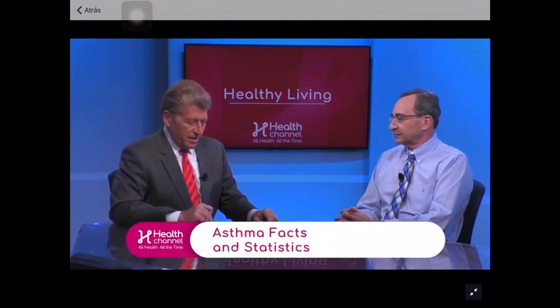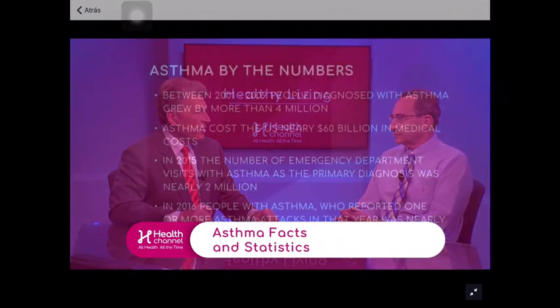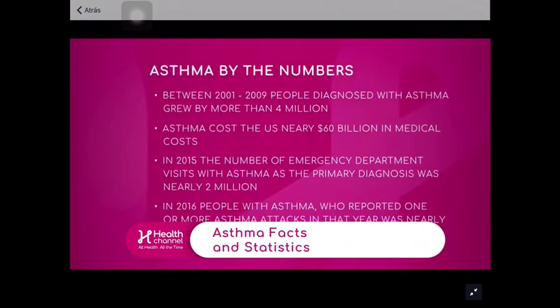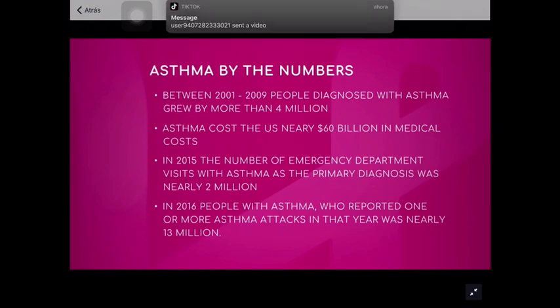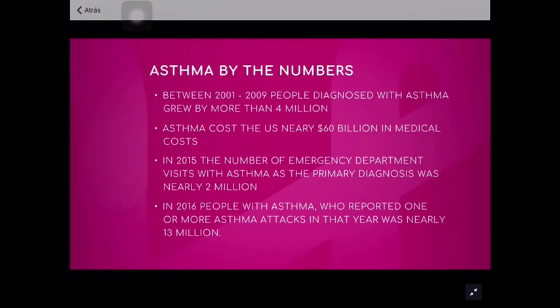When you look at what the CDC has on asthma, they're frightening in some ways because I don't think people realize what we're looking at with regard to this disease. Between 2001 and 2009, people diagnosed with asthma grew by more than 4 million people. Our air quality outside is much better in the United States than it used to be a generation ago — why is that number rising so exponentially?